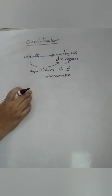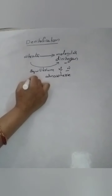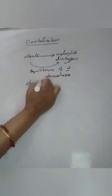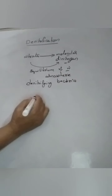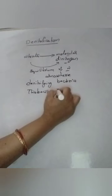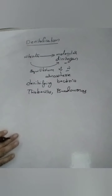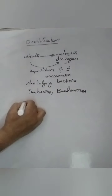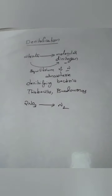Bacteria also help in denitrification — this is complete biological nitrogen cycling. The bacteria that help in denitrification are denitrifying bacteria, for example Thiobacillus and Pseudomonas. The nitrate is converted into the dinitrogen form.